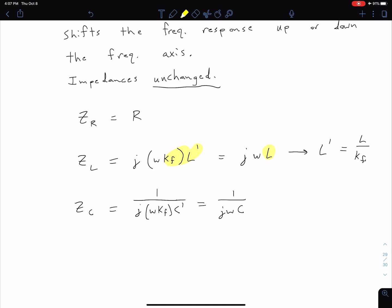This needs to equal 1 over j omega C. By inspection, we see that C equals kf times C'. Therefore, C' equals C divided by kf.